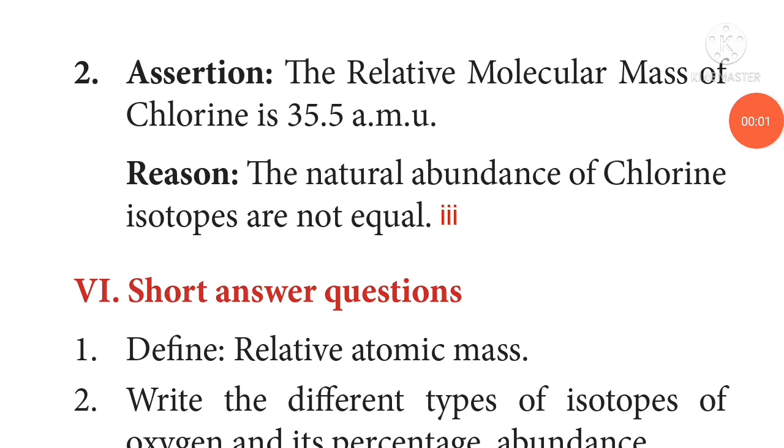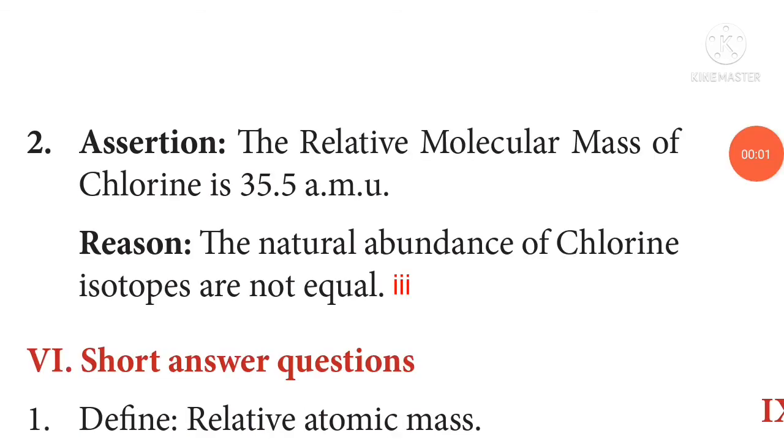Assertion: The relative molecular mass of chlorine is 35.5 AMU. Reason: The natural abundance of chlorine isotopes are not equal. Correct answer: A is wrong, R is correct.